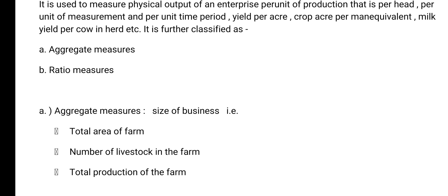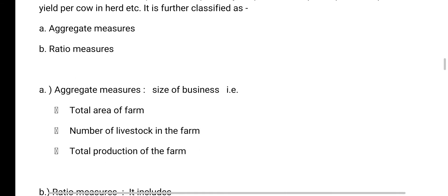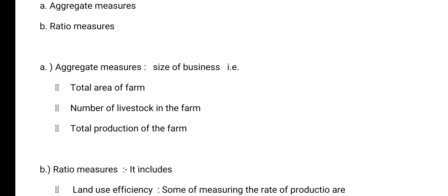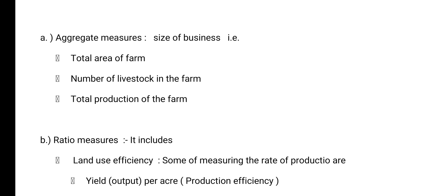and ratio measures. Aggregate measures: size of business means total area of farm, number of livestock in the farm, total production of the farm.